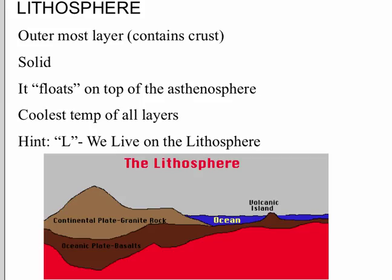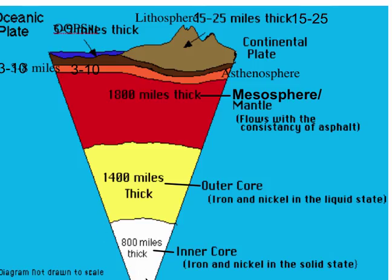The last layer is the lithosphere — it's the outermost layer. It has the crust where we walk on. It's solid and it floats on top of the asthenosphere. It has the coolest temperature — just go out and touch the ground, that's what temperature it is. We live on the lithosphere. The asthenosphere is roughly 3 to 10 miles thick, versus the lithosphere which can be 15 to 25 miles thick — thicker, of course, where mountains are.